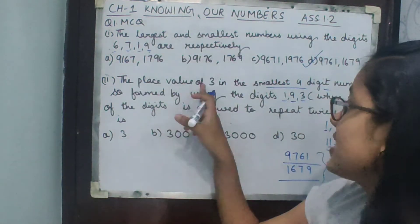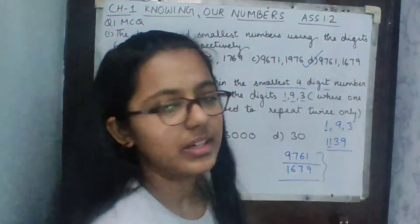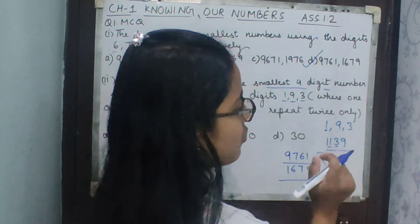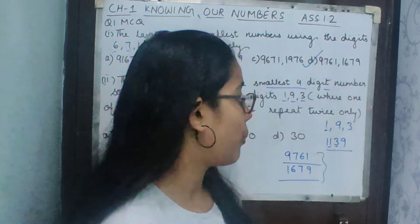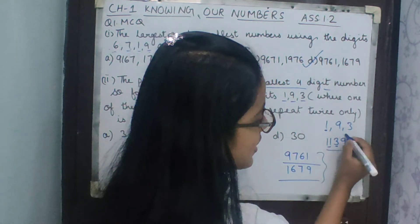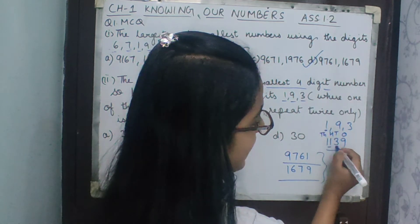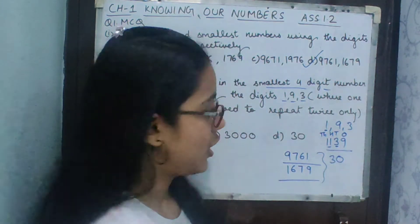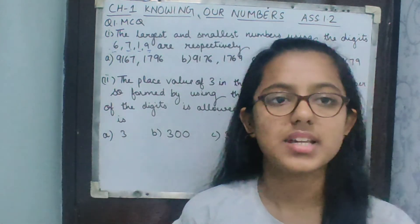Our number is 1139. Now we need the place value of 3. The place values from right are: ones, tens, hundreds, thousands. So 3 is at the tens place, and therefore the place value of 3 is 30. Option D is the correct answer.